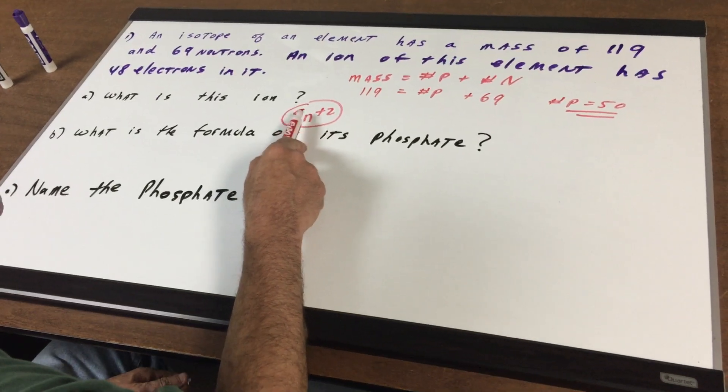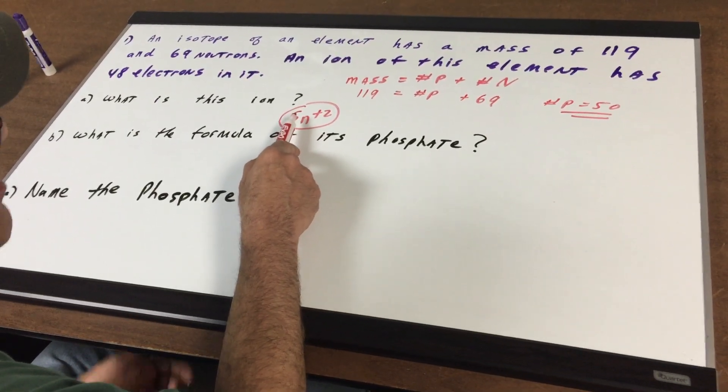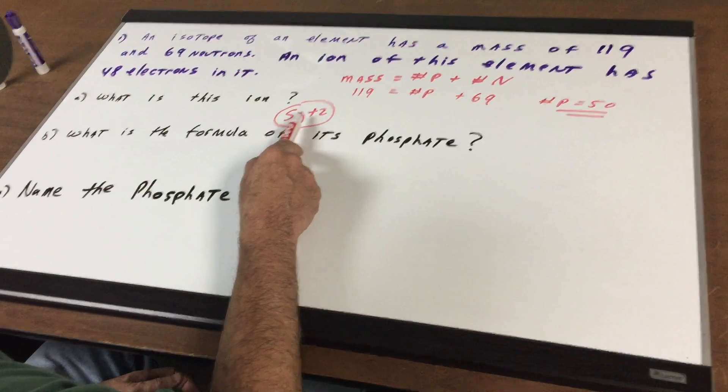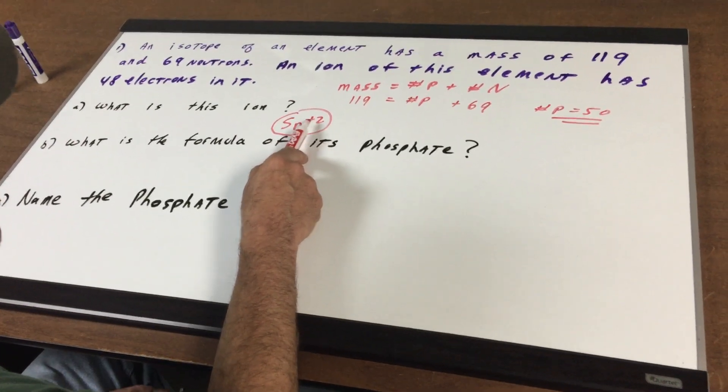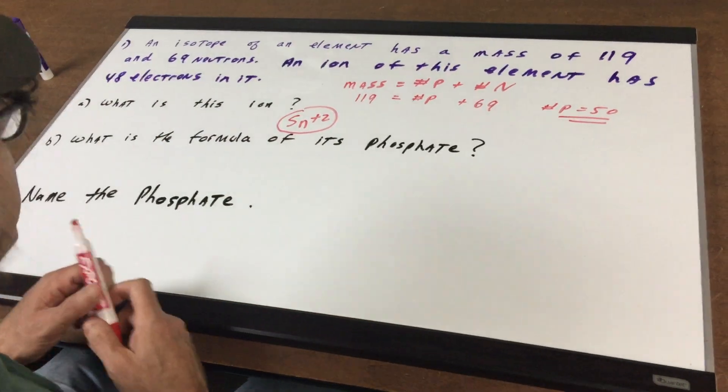So if you go back and check it, this would indeed have an atomic number of 50 and how many electrons? Since it's a plus 2 it would be 2 less, there would be 48 to confirm it.